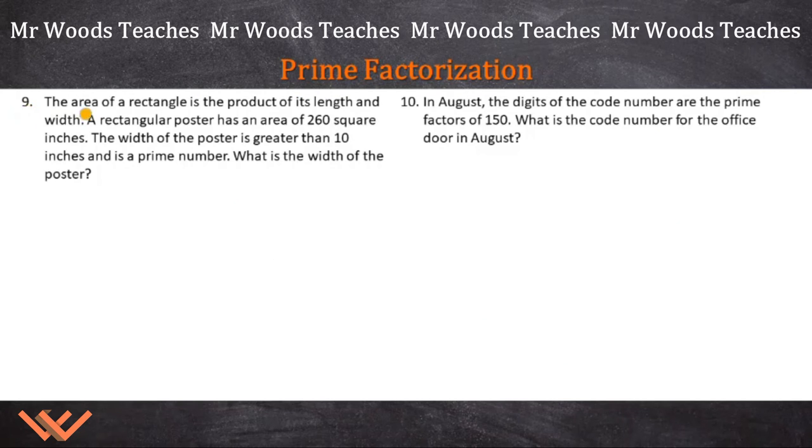Let's do some word problems. Let's look at number 9. The area of a rectangle is the product of its length and width. A rectangular poster has an area of 260 square inches. The width of the poster is greater than 10 inches and is a prime number. What is the width of the poster? First, we can look at this as length times width is equal to the area. So we have that formula that we need to know. So the area of the rectangle. So I have this rectangular poster. See how it's rectangular. So my length is probably taller than my width. Or is it the other way around? So it has this area. So it has the area of 260 square inches and the width of the poster is greater than 10. So here we go. There's that width is greater than 10. And it's a prime number. So it's greater than 10 and a prime number.